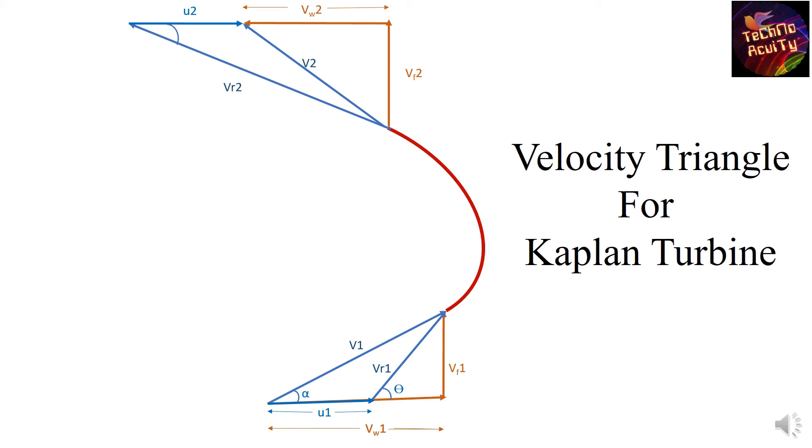The angle made by relative velocity with the blade velocity is phi, also known as blade angle at outlet. While the angle made by absolute velocity with blade velocity is denoted as beta.